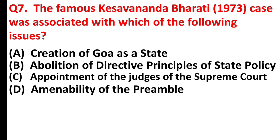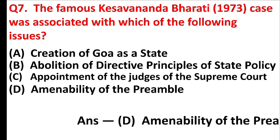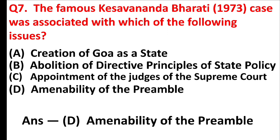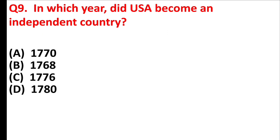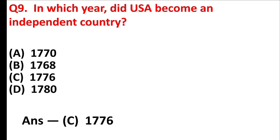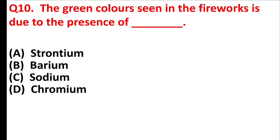The famous Kesavananda Bharati case was associated with which of the following issues? Answer is Option D: Amenability of the preamble. In which year did USA become an independent country? Answer is Option C. The green color seen in fireworks is due to the presence of Answer is Option B: Barium.